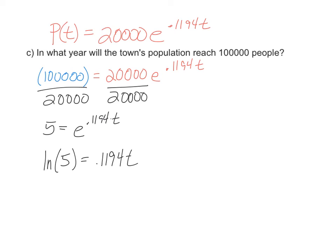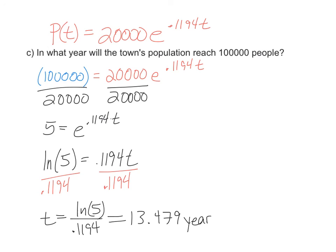In the final step for solving, we'll divide by 0.1194, and that gives us t equals natural log of 5 divided by 0.1194. We'll switch this over to a number, and we get 13.479, and our time unit here is years.